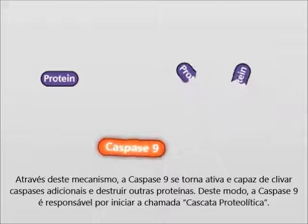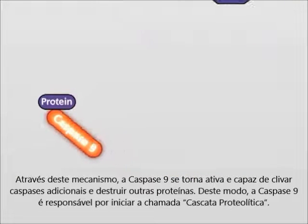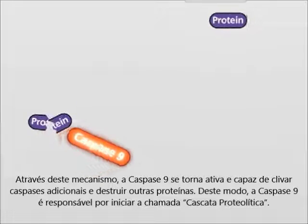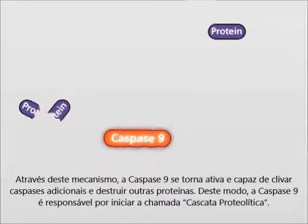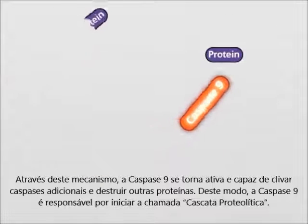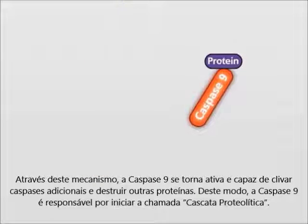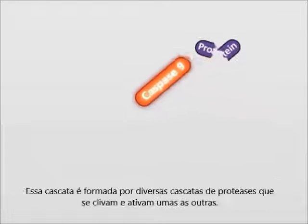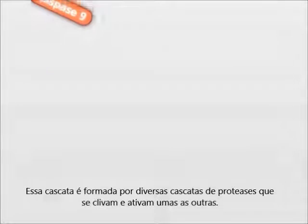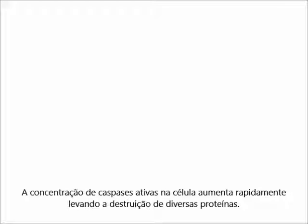Active Caspase 9 is able to cleave additional Caspases and to destroy many other proteins, initiating the so-called Caspase cascade. This cascade denotes a stepwise cascade of proteases that cleave and thus activate each other. The concentration of active proteases in the cell increases rapidly, leading to the destruction of many different proteins.